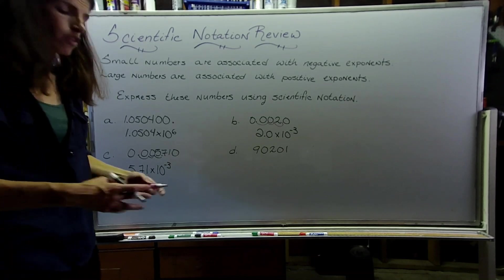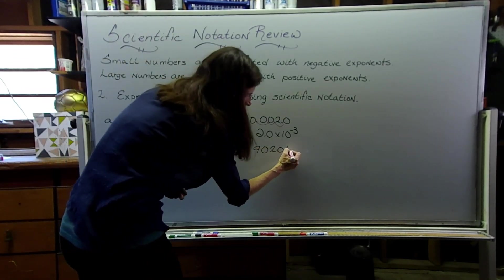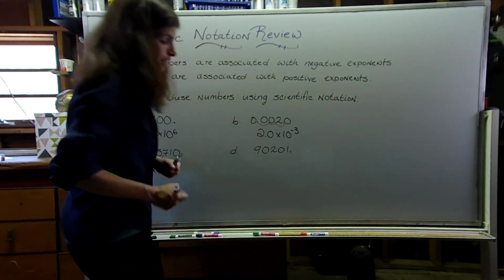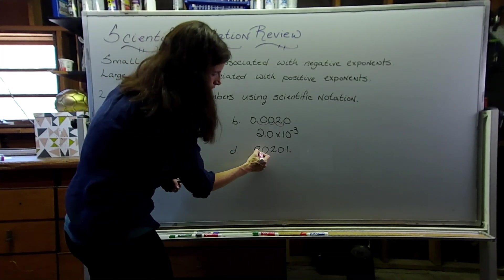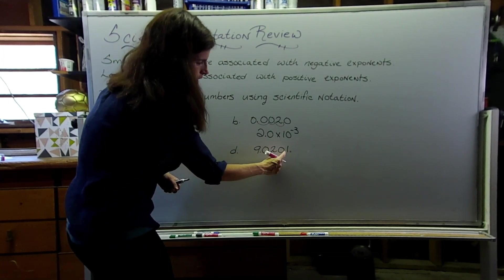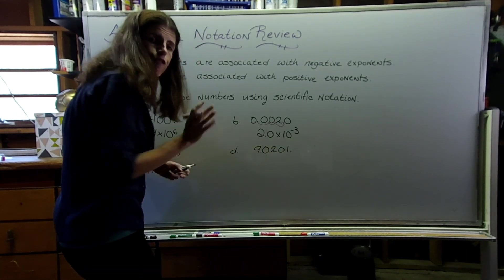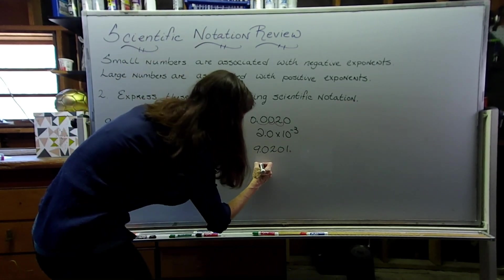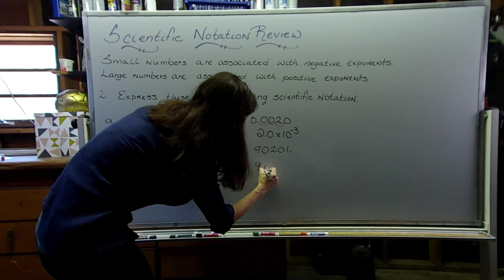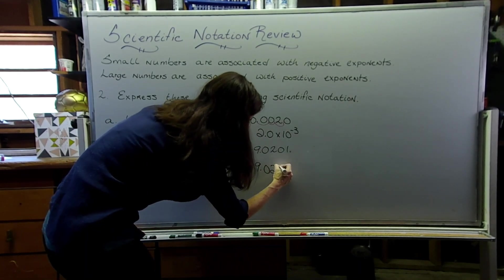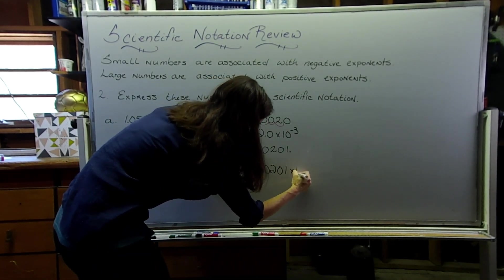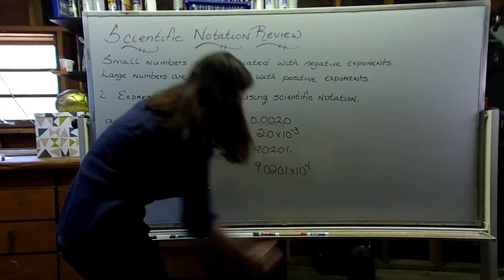Last one, we have another larger number, so positive exponent. And I need to move that decimal place all the way to here. So that's 1, 2, 3, 4 jumps. So we'll do 9.0201 times 10 to the fourth.